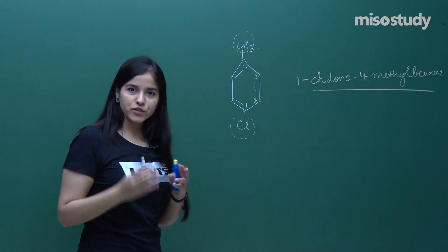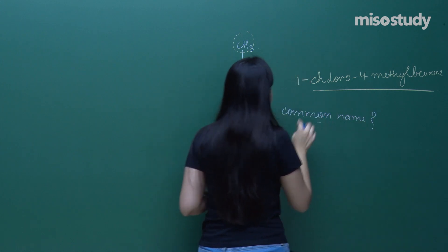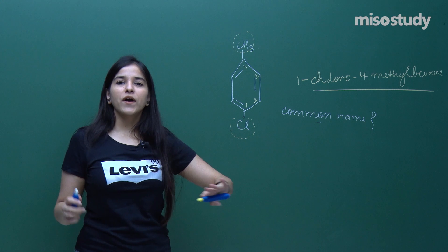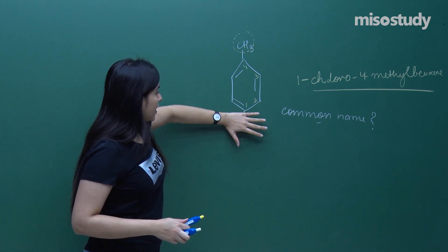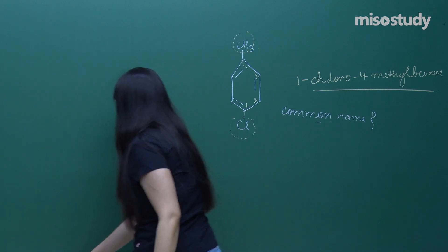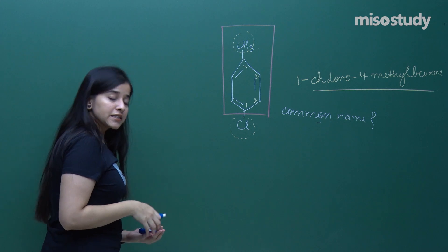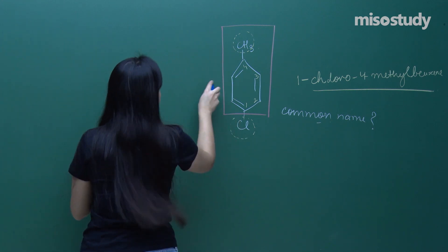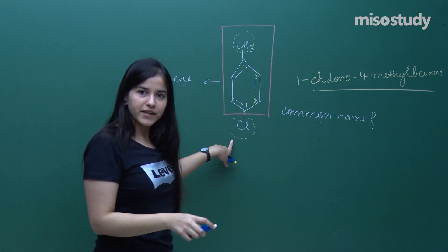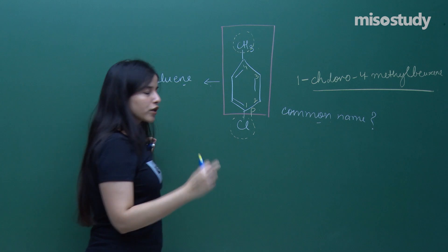Now the question was: what was the common name for this particular compound? As I told you, it's completely different from what we have written over here, not at all associated. Because what we are going to do while deciding the common name is, if I don't consider this chlorine, I have got a benzene attached with a methyl. This particular compound — this is the common name I am telling you.